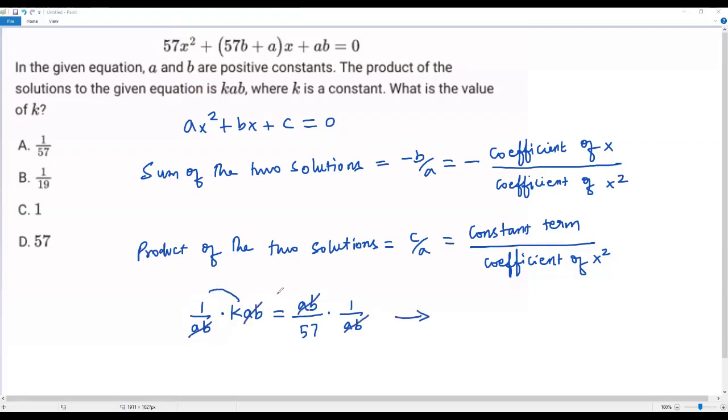On the left side we have 1 times k is k. On the right side, ab goes into ab one time, and we have 1 times 1 is 1 with 57 in the denominator. That is ab goes into ab one time, 57 times 1 is 57.